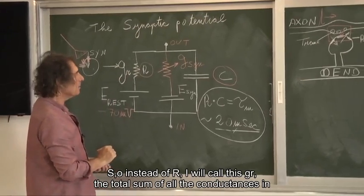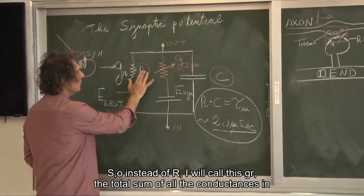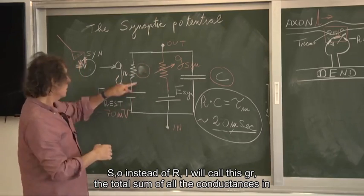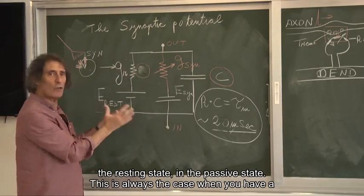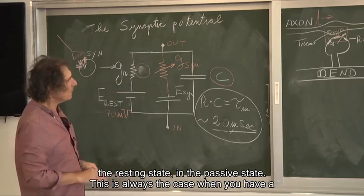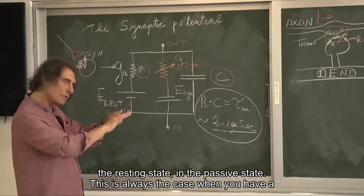So instead of R, I will call this GR. The total sum of all the conductances in the resting state, in the passive state. This is always the case when you have a membrane.